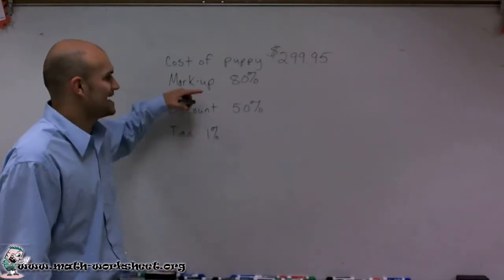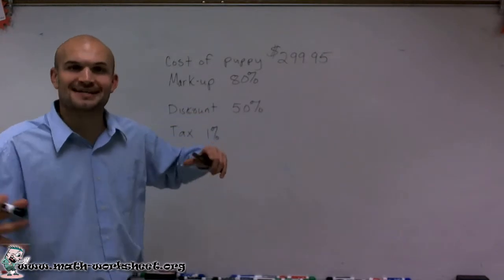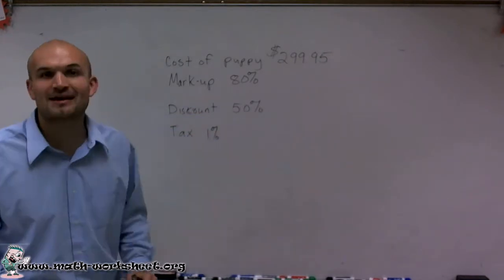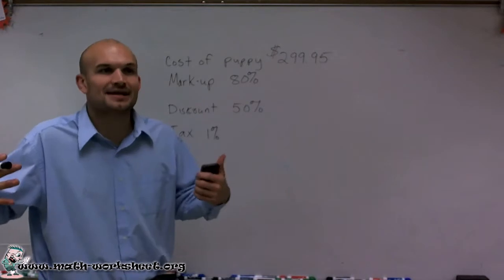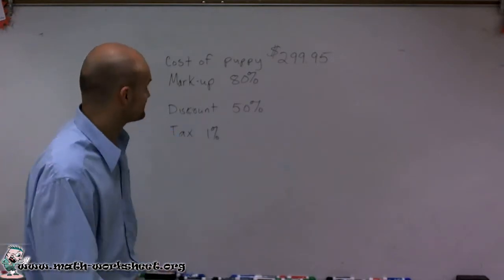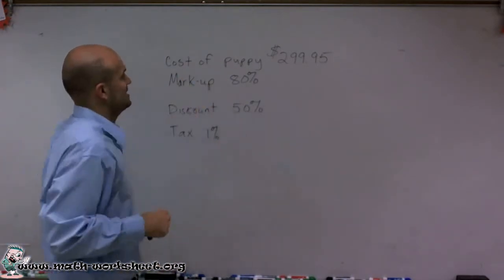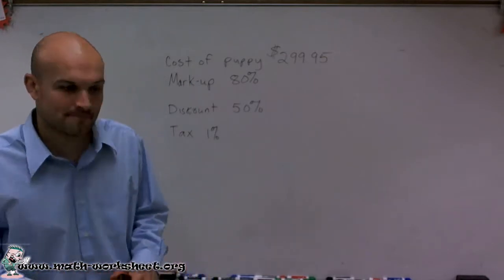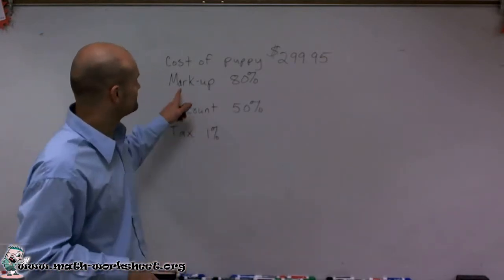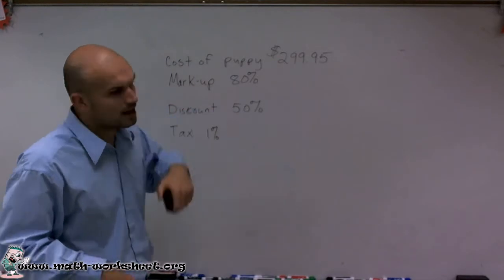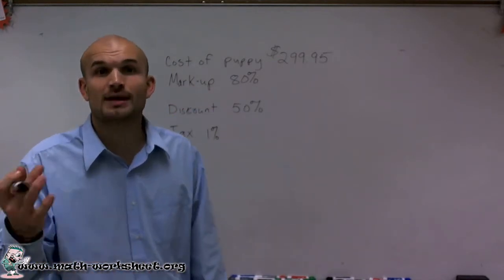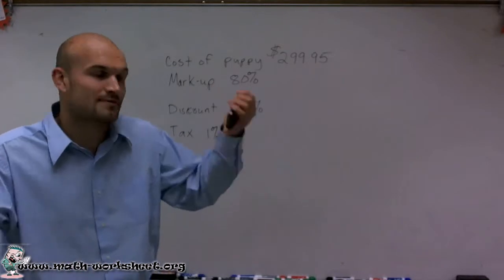Now I don't really have an exact dialogue to tell you why it's getting marked up and why we're having a discount, but let's just look through a scenario here. Let's say the original cost of the puppy is $299.95, right? But let's say as the puppy gets a little bit older they mark it up 80%, like per month it goes up.